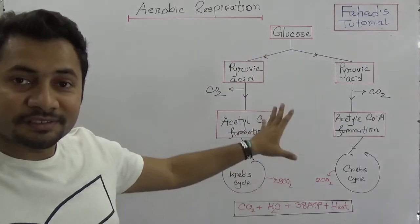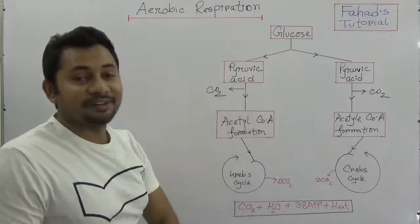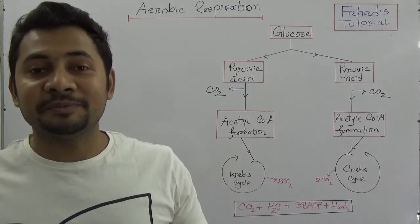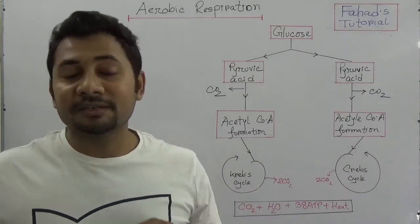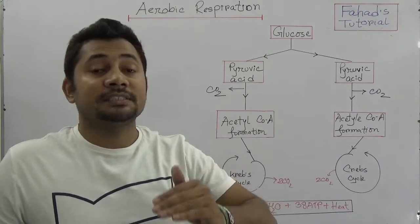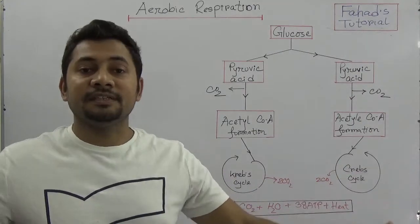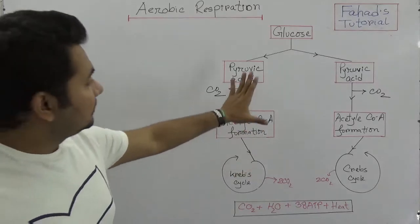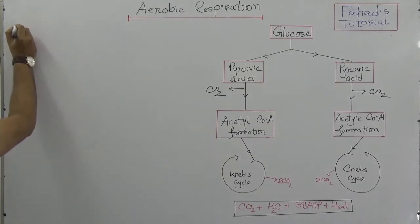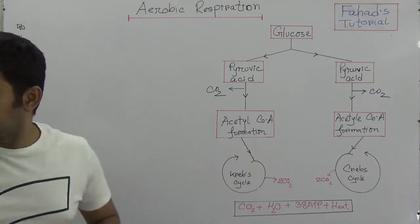You already know these figures because they are given in your book. In this video I shall explain how these things work, then in the next video I shall explain how 38 molecules of ATP are produced, and after that I will explain anaerobic respiration at SSC level biology. Looking at this figure, in aerobic respiration we have four different steps.